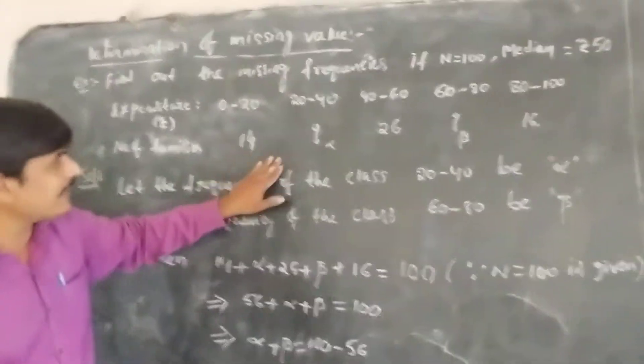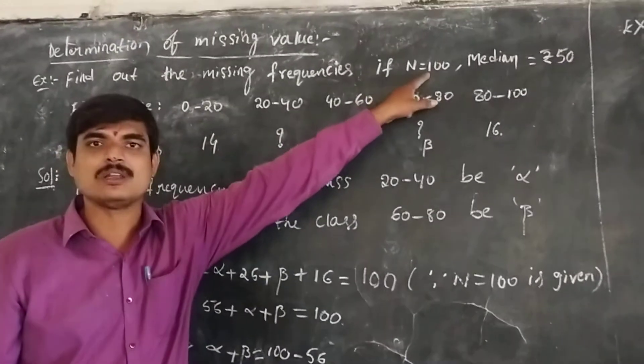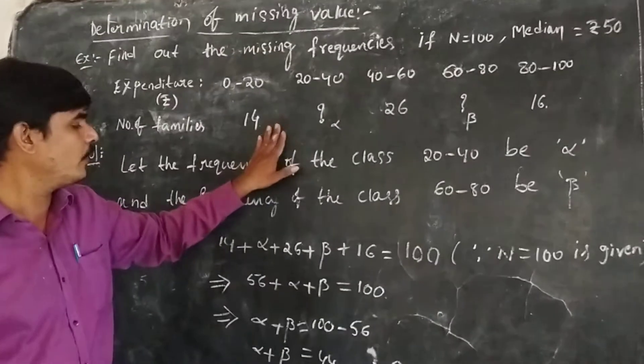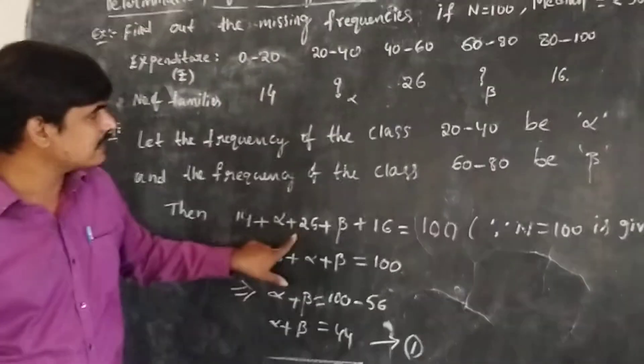Summing all these frequency values: 14 plus alpha plus 26 plus beta plus 16.